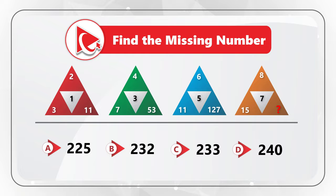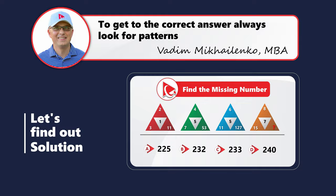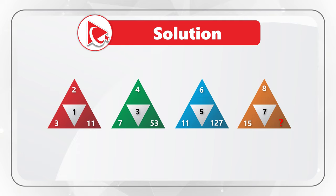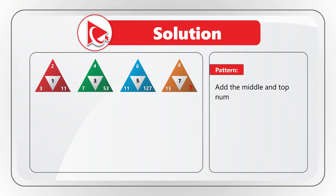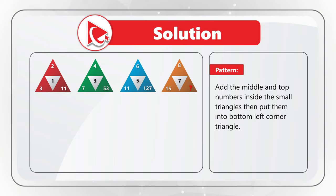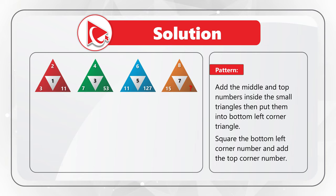I am moving forward to share with you my version of the solution. As you might have guessed, to solve this challenge you need to find the pattern. The pattern is that if you add the middle number and the top number inside the small triangles, then put them into the bottom left corner of the triangle, and then square the bottom left corner number and add the top number. Let's look at the first triangle as an example.